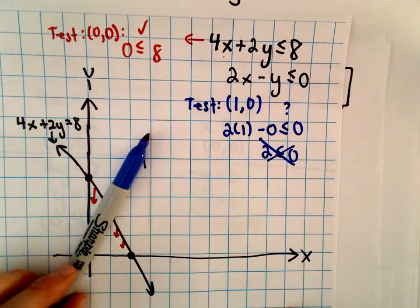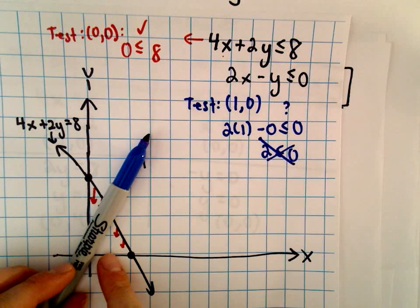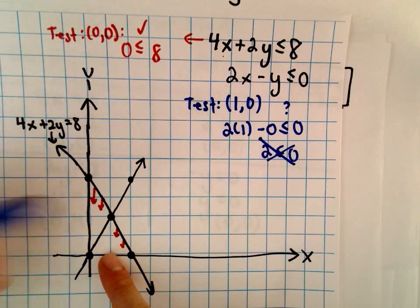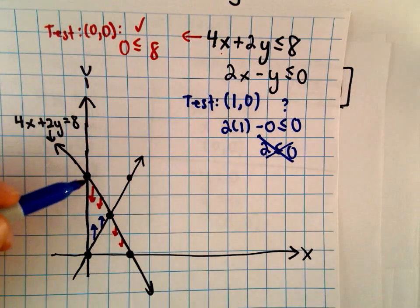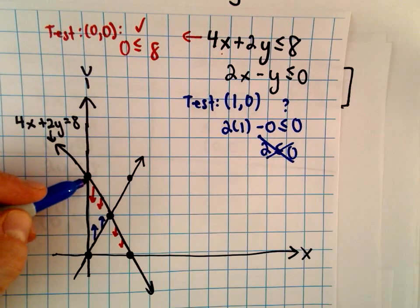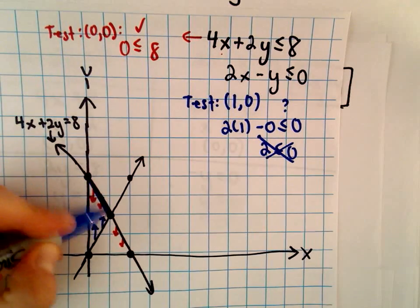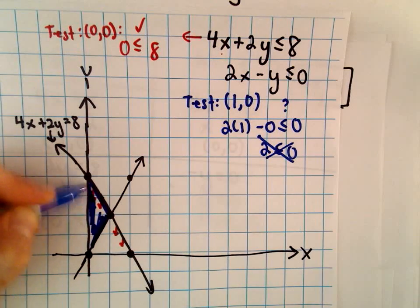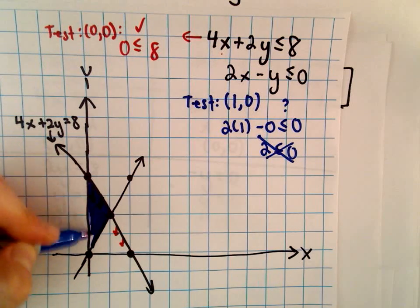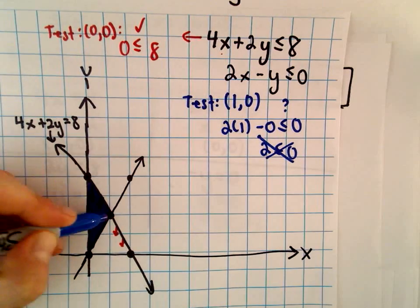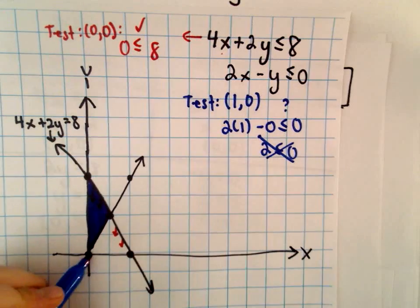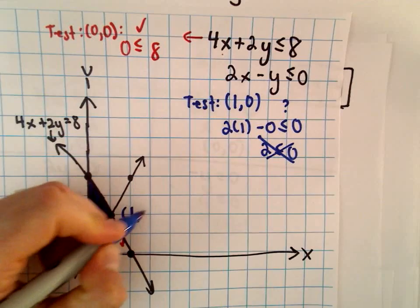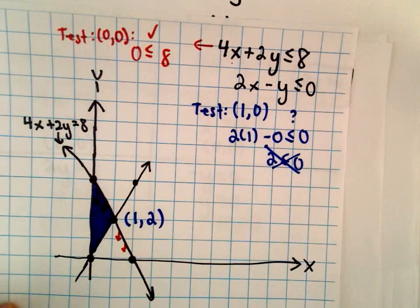So for my second inequality, the test point was below it, which means we need to shade above it. And since we're trapped in the first quadrant, we know that our feasible region is going to be this little triangular region that's touching the y-axis. And it's easy to see that this is going to cross at the point 1, 2. So that's the benefit of having a nice, good graph.